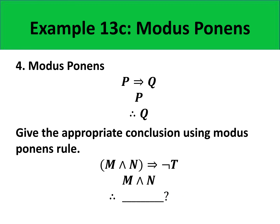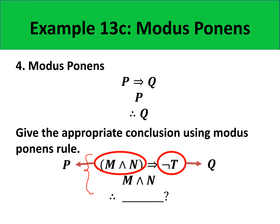Using modus ponens, let us identify the correct conclusion of this argument. Here, M and N takes the role of P, and negation of T takes the role of Q — that is our first premise. The second premise is M and N, which takes the role of P. So it follows the format of modus ponens, and our conclusion must be Q, which corresponds to negation of T.